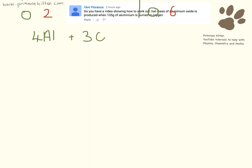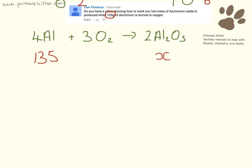So 4Al plus 3O2 is going to give us 2Al2O3. So what we need to do now is to just have a look at the numbers that we have in the question. We can see that we have 135 grams of aluminium. So I'm just going to put 135 grams of aluminium there. And we need to find out the mass of aluminium oxide. Those are really the only two numbers we need. We don't actually need to be interested in the oxygen. So you have 135 and we have the number we're trying to work out.